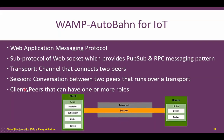A client will have one or more roles. A client can work as a publisher, a subscriber, a caller, or a callee. These are the different roles of a single client, depending on whether it is used in the publish-subscribe model or in remote procedure calls. The different roles of a router are that it will either work as a dealer or as a broker.